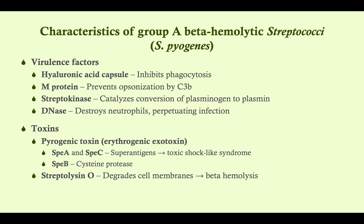Streptokinase catalyzes the conversion of plasminogen to plasmin, which breaks down fibrin clots. We once used streptokinase pharmacologically to treat strokes, but we don't use it much anymore because it's immunogenic — patients make antibodies against it. DNAase destroys neutrophils and perpetuates infection. Pharmacologically, DNAase can be manufactured synthetically as dornase alpha, which we use for patients with cystic fibrosis to thin out secretions and help clear their airways.